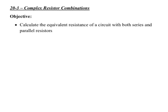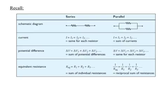All right, 20-3 complex resistor combinations. We're going to look at the equivalent resistance of a circuit with both series and parallel resistors in that one circuit. So imagine now we have a circuit like most things in real life that are both. Let's start to remember these three things. We just looked at them a minute ago, but just remember them.